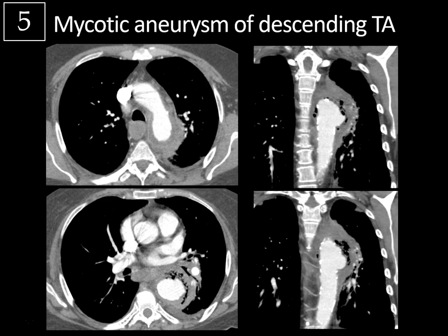Mycotic aneurysms occur in the setting of infection of the arterial wall, usually bacterial, often from hematogenous spread, typically from infective endocarditis — but direct seeding from an adjacent infection can also occur. In this case, the patient had an esophageal perforation that seeded the area and evolved into this mycotic aneurysm. Clues to mycotic aneurysm include fluid and aortitis of the adjacent aorta, multiple foci of gas surrounding the aneurysm, and a saccular rather than fusiform shape with an irregular multilobulated appearance. They often occur in atypical locations for atheromatous disease.